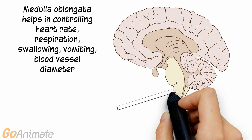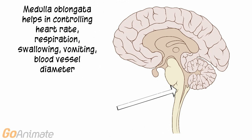The medulla oblongata helps to regulate heart rate, respiration, swallowing, vomiting, and blood vessel diameter.